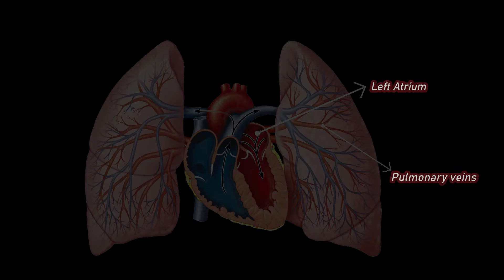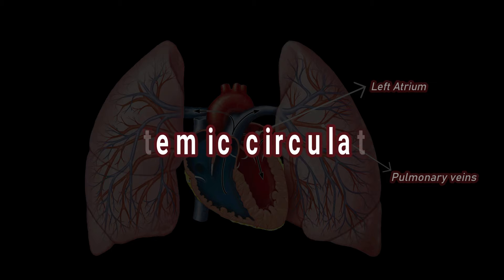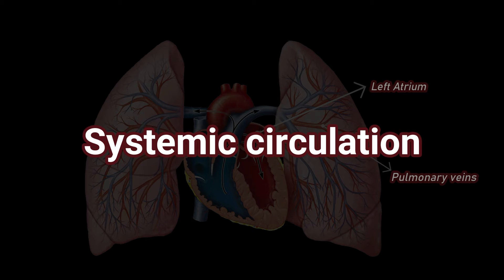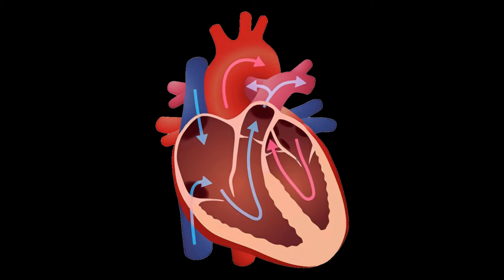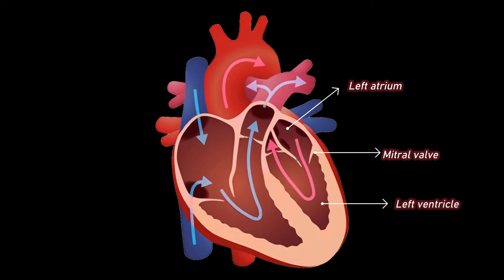From here starts the systemic circulation, the second part of the double circulation system. Oxygenated blood from the left atrium passes through the mitral valve into the left ventricle. The left ventricle contracts, pumping oxygen-rich blood through the aortic valve and into the aorta, the body's largest artery.